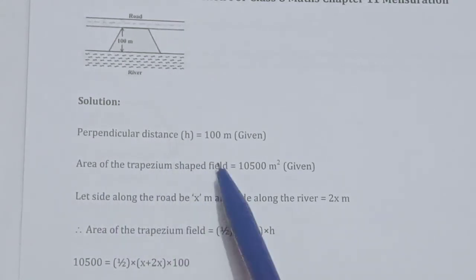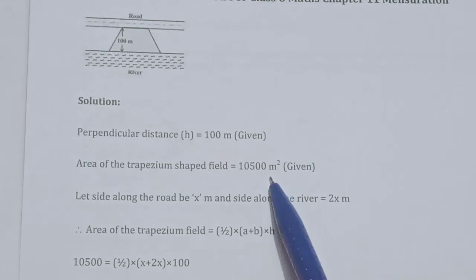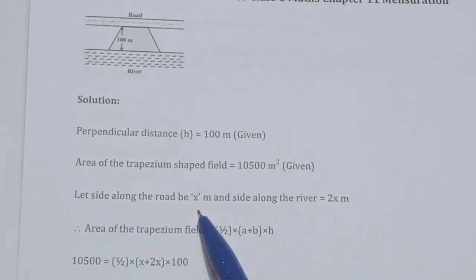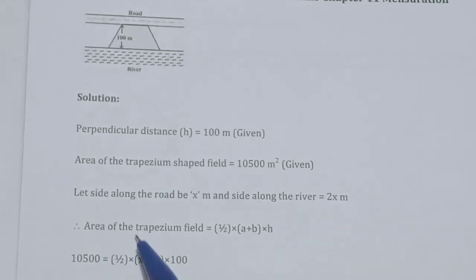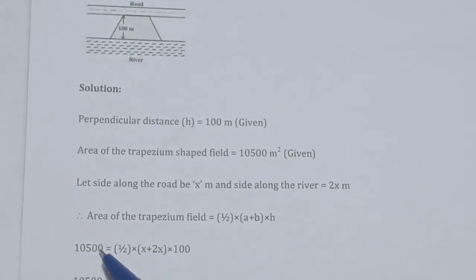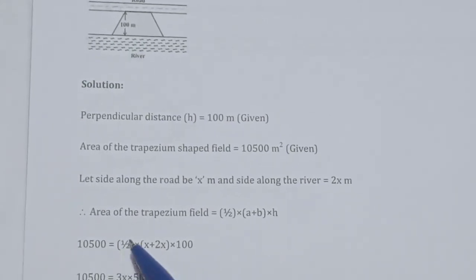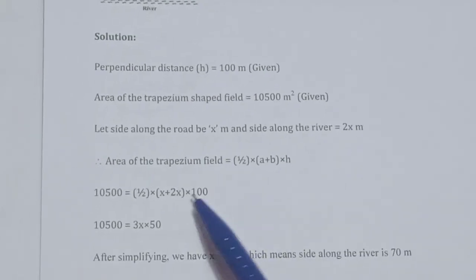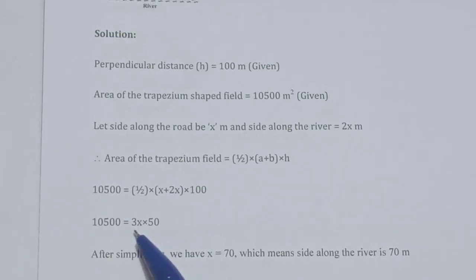The area of the trapezium shaped field is 10,500 m² and the perpendicular distance is 100 m. Let the side along the road be x meters and the side along the river be 2x. Area of trapezium = ½ × (a + b) × height. So 10,500 = ½ × (x + 2x) × 100.